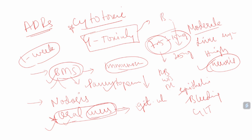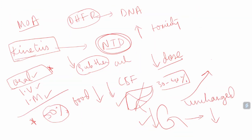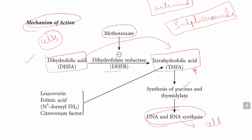If methotrexate toxicity occurs, we have folinic acid — also called leucovorin, N5-formyl-tetrahydrofolate, or citrovorum factor — for treatment. All these are names for folinic acid, which is similar to folic acid but not exactly folic acid. When a patient is suspected of methotrexate toxicity, we should check for GI ulcers and bone marrow suppression, and always suggest leucovorin to treat the toxicity.